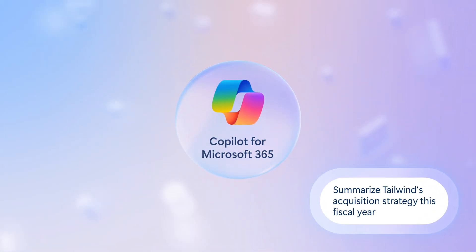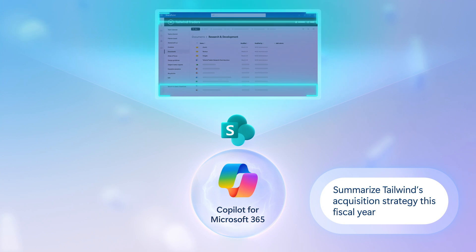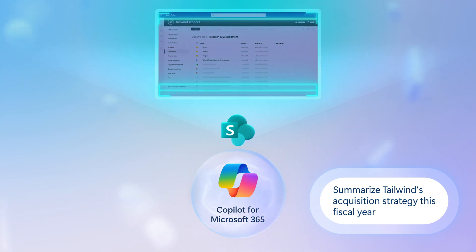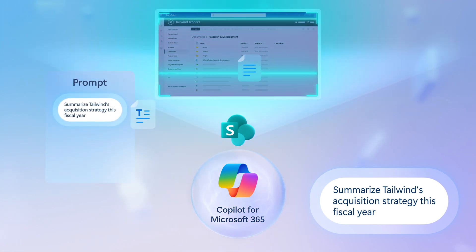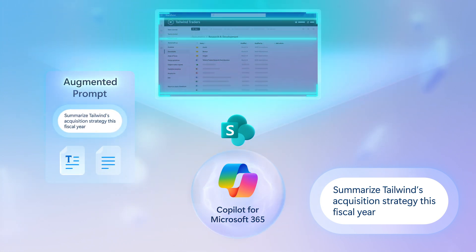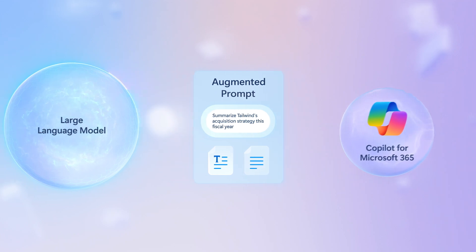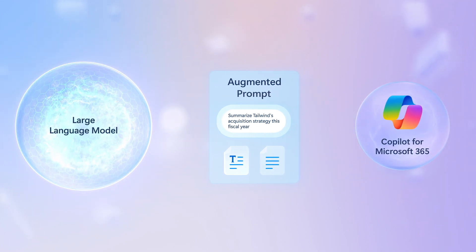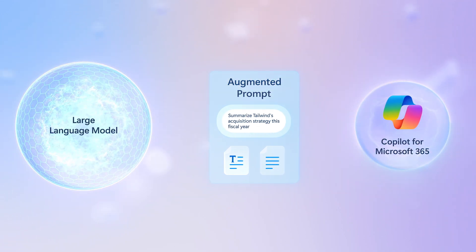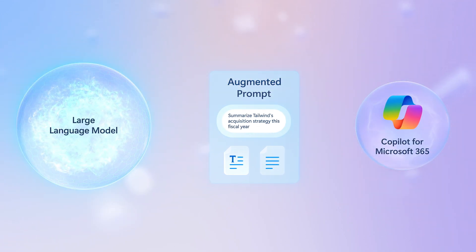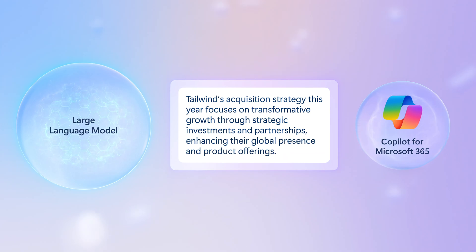As you interact with Copilot, search can be used as part of the Copilot grounding process, where relevant information in your organization can be discovered and used to ground the large language model to augment user prompts with more context in order to return more relevant results.